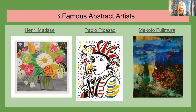Our next artist is Pablo Picasso, and he too very clearly chose to give an abstract idea of the things that he painted and the people. And lastly, I have Makoto Fujimura. This is very abstract expressionism, just very beautiful and representative, and he has titles for his works.